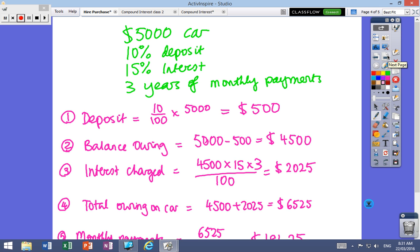So the deposit is, okay, so 10%, it's 10 over 100, multiplied by the amount, you get $500. So how much do you owe? You still owe $4,500 on the car.